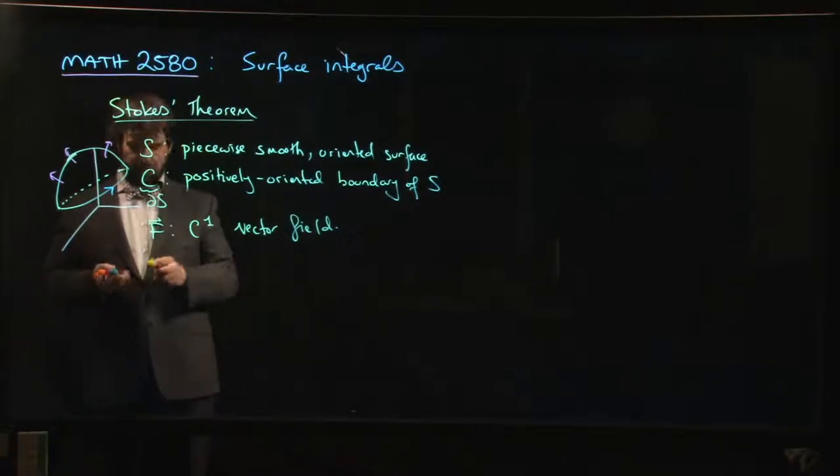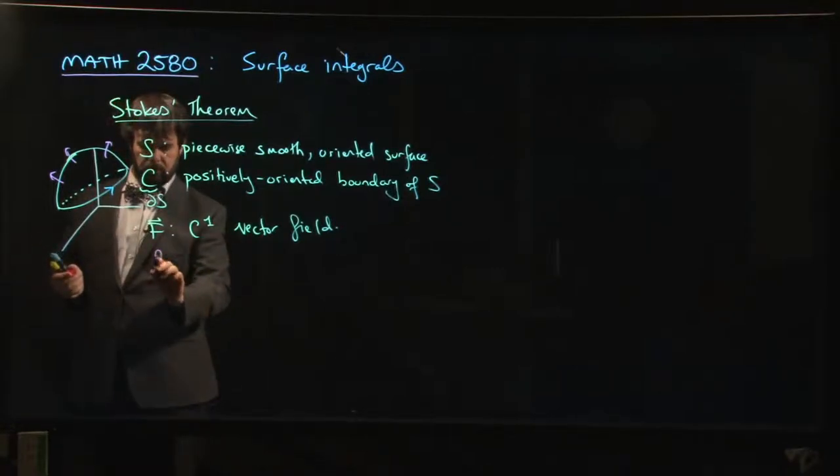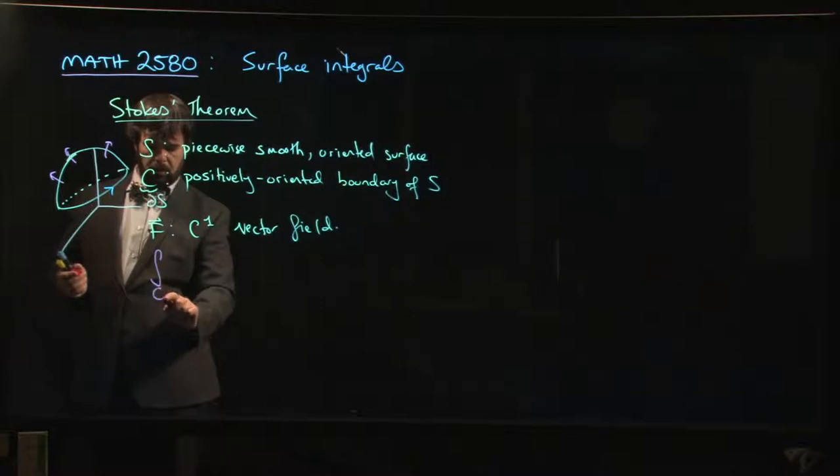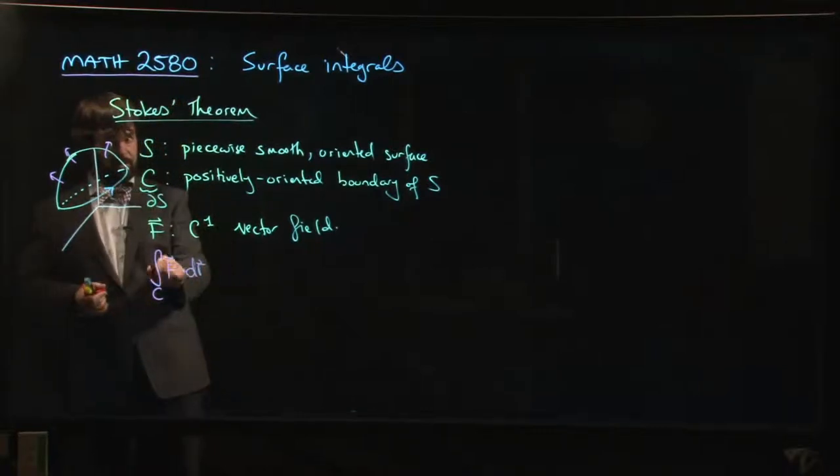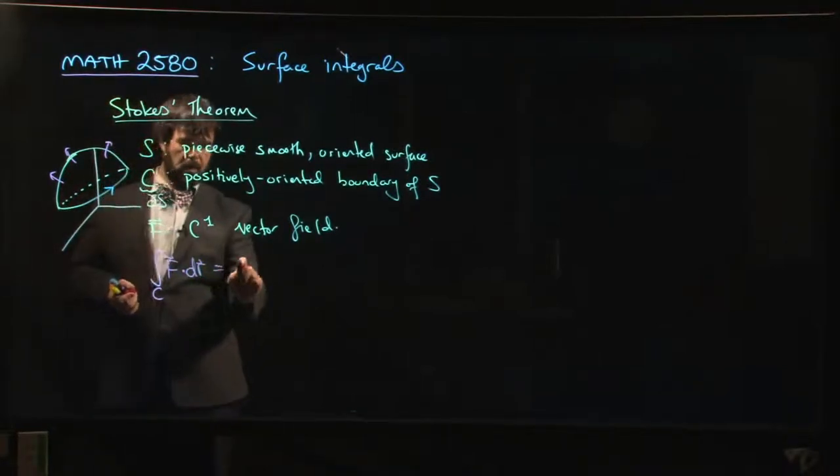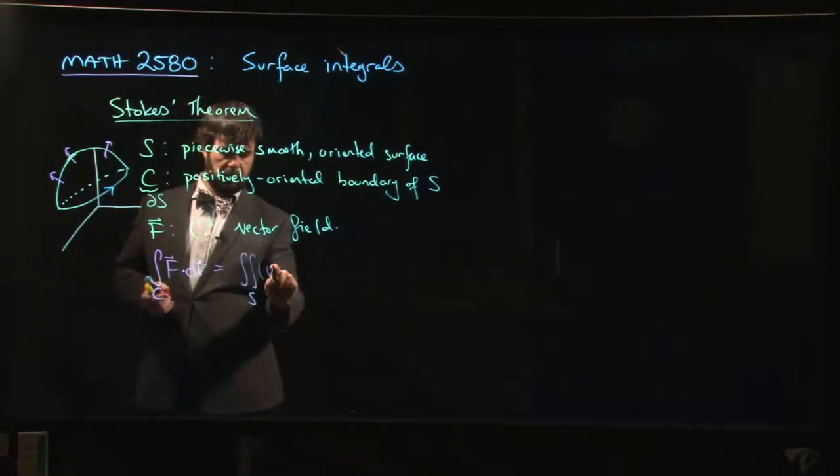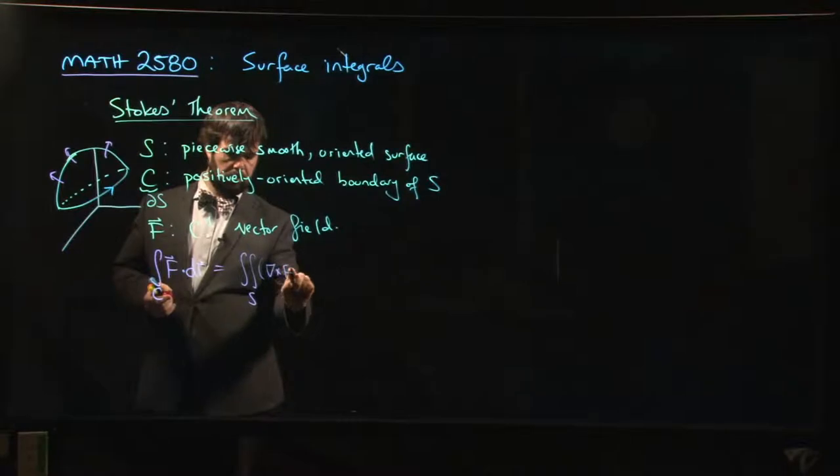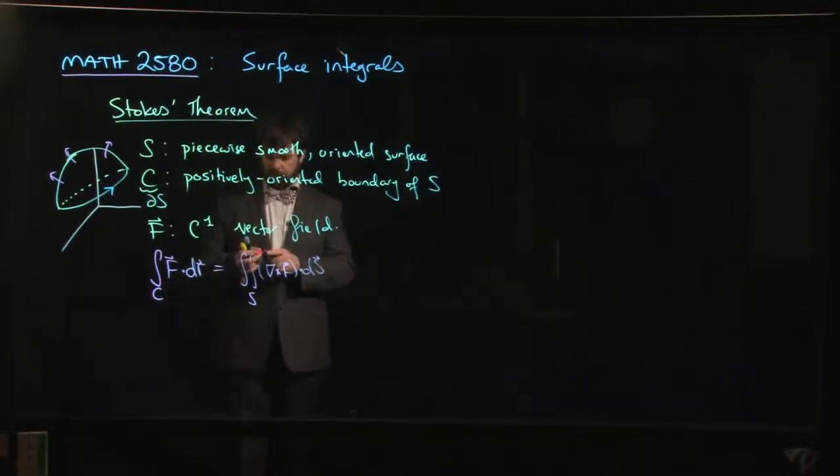So with these ingredients, Stokes' theorem says the following. Stokes' theorem says that the integral around C of F·dr is the same thing as the integral over the surface S of the curl of F·dS. So this is Stokes' theorem.